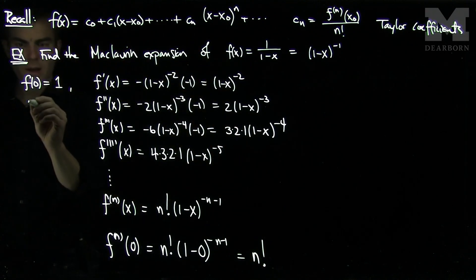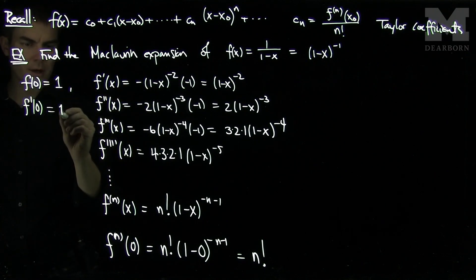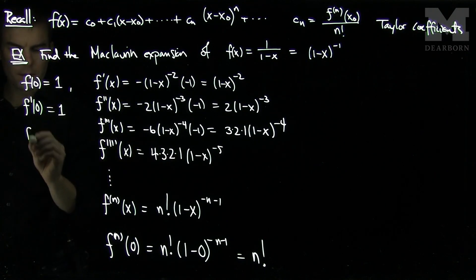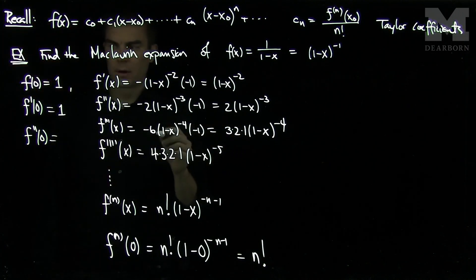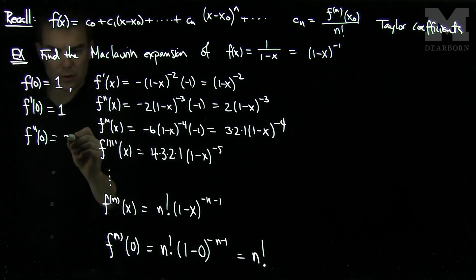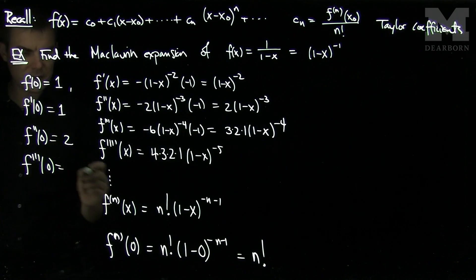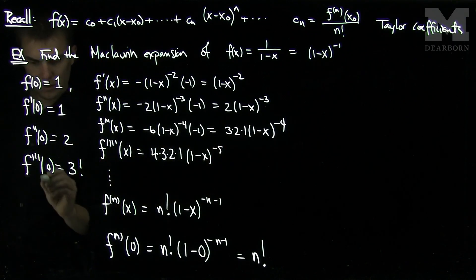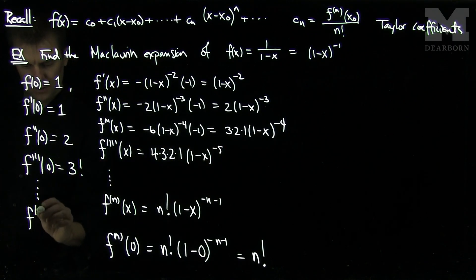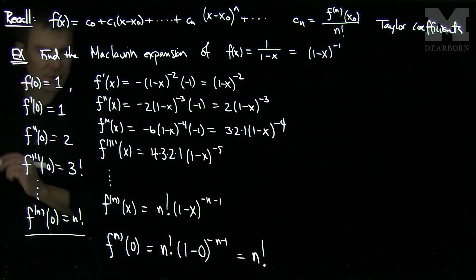So this tells me that f prime of 0, we can look over here, f prime of 0 will be also equal to 1. f double prime of 0 will be equal to 2. f triple prime of 0 is equal to 3 factorial all the way down to f to the n of 0 is n factorial. And there's our general formula.